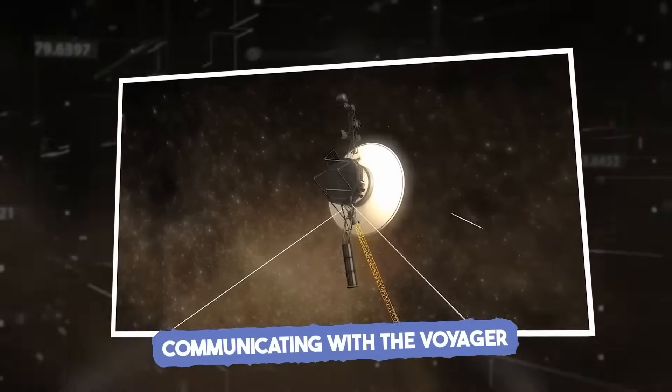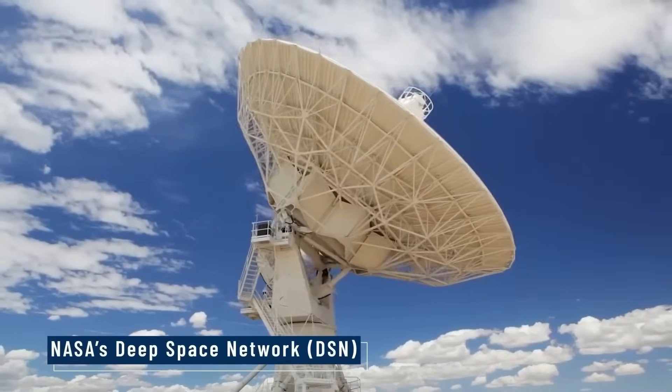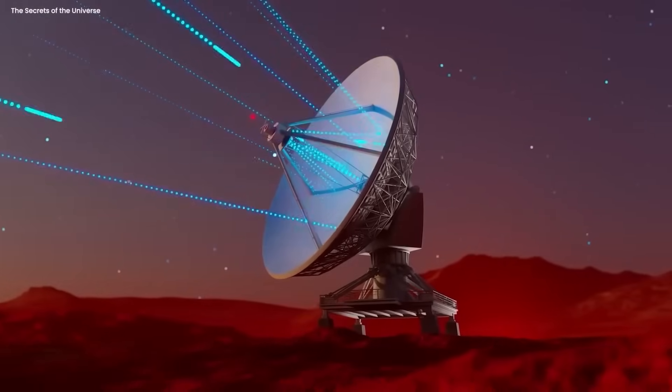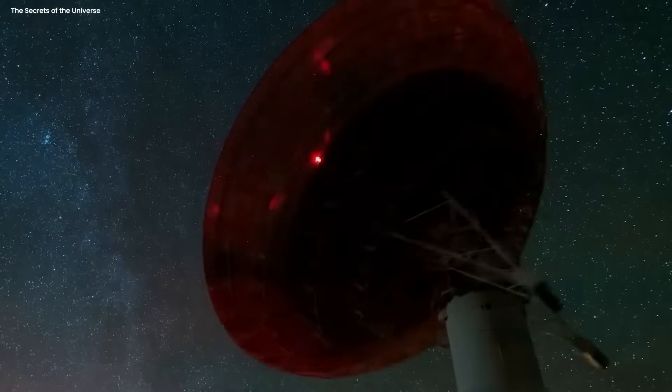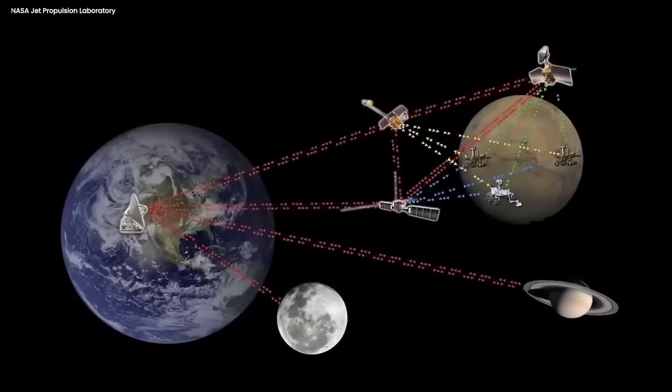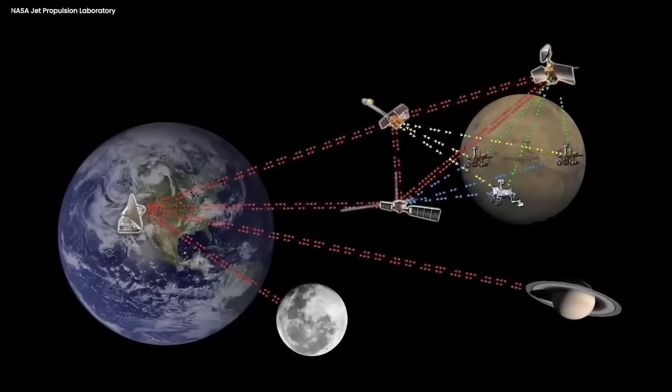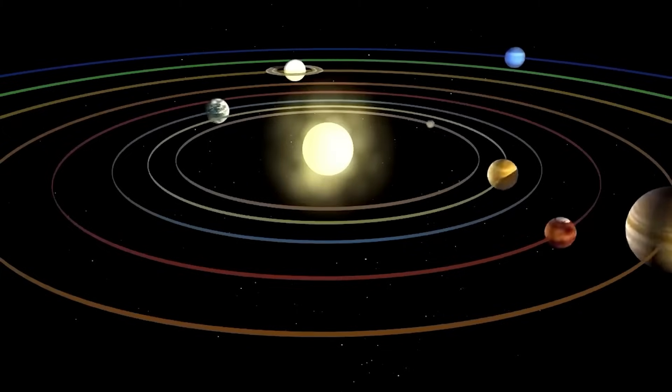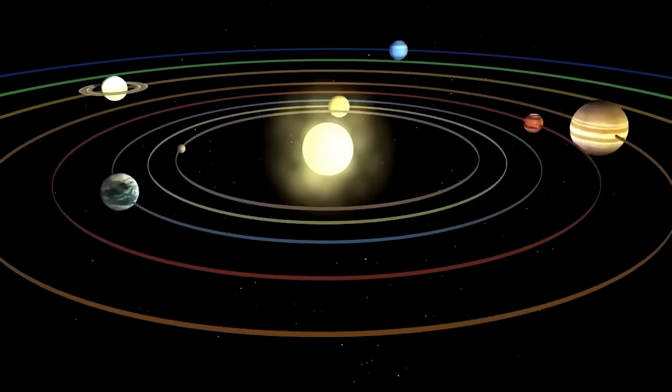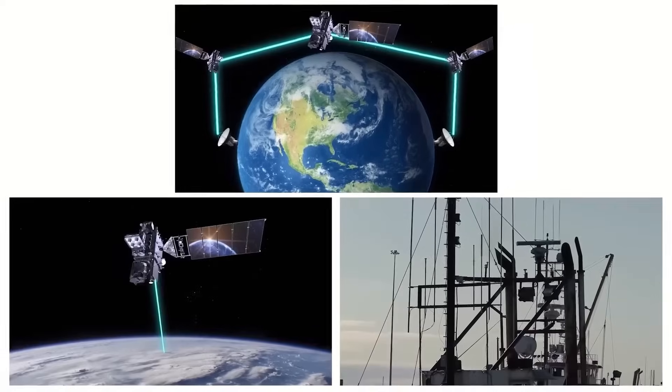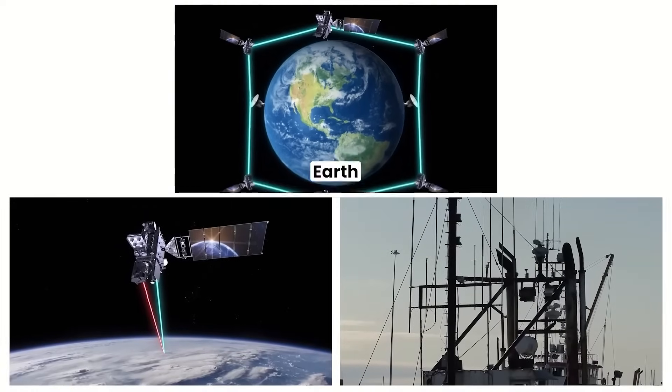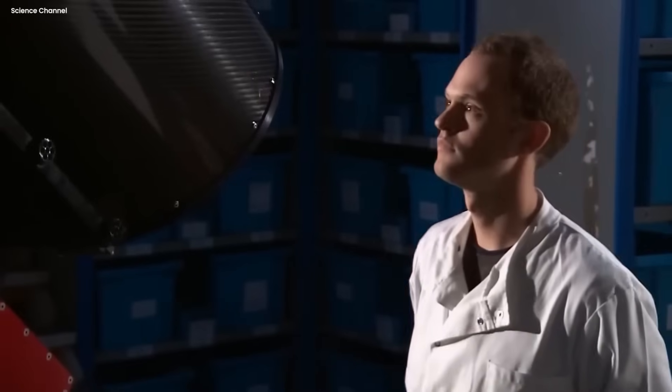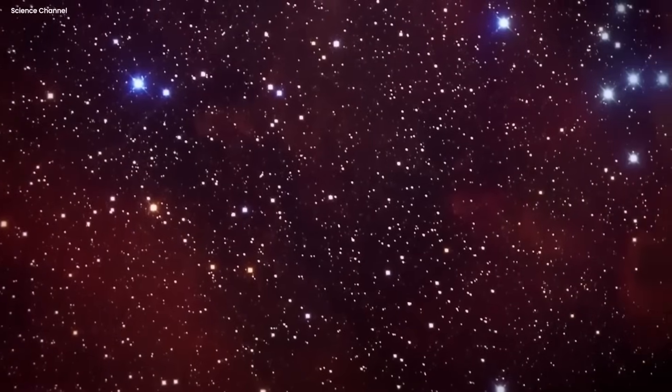When NASA's Deep Space Network DSN team sends a command to Voyager 1, it travels as a radio signal at the blazing speed of light. The Deep Space Network is a sprawling network of colossal radio antennas strategically positioned across the globe. Its purpose is to establish vital communication links with spacecraft exploring the far reaches of our solar system and beyond. It plays a crucial role in enabling two-way communication and conducts radar and radio astronomy observations.